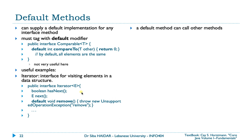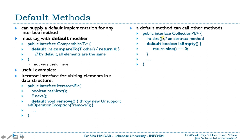A default method can call other methods. For example, in public interface Collection, with an abstract method size(), you can have a default method isEmpty() that calls size() and returns true if size returns zero. This is a very wise default implementation. However, in the Collection framework this isn't the actual case, since the AbstractCollection class already handled implementing abstract methods before Java 8.